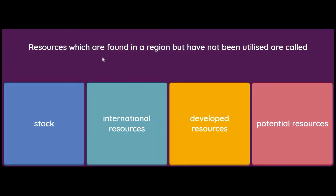Resources which are found in a region but have not been utilized are called: stock, international resources, developed resources, or potential resources? The answer is potential resources. For example, in Rajasthan and that area there is a lot of wind, but we have not utilized those resources, so they are called potential resources.